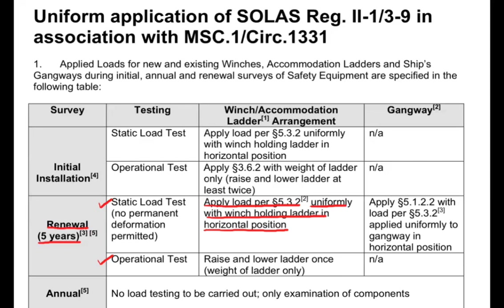If neither design load nor maximum operational load is known, you nominate that load, with nomination done by the owner. After testing on the nominated load, once successfully tested with no damage or deformation, that nominated load becomes the maximum operational load and must be marked on the plate as per 3.5. For the operational test during the five-yearly renewal, there is a difference from initial installation: you raise and lower the ladder only once, with the weight of the ladder only.